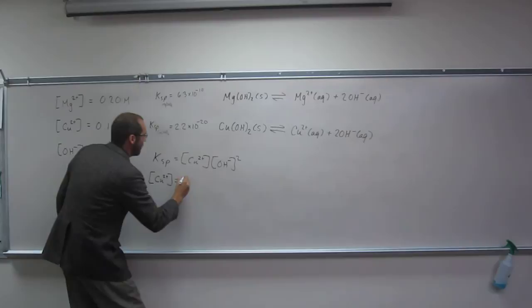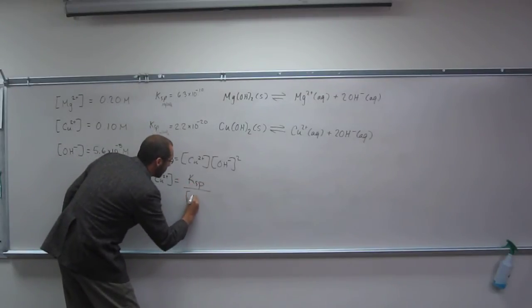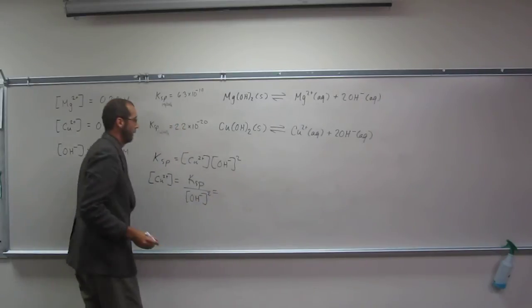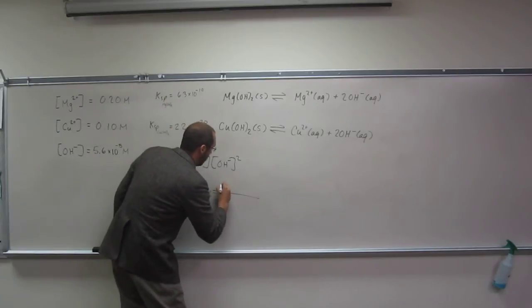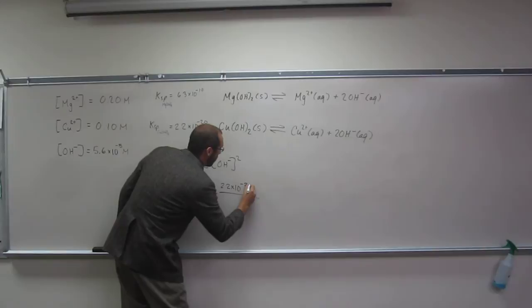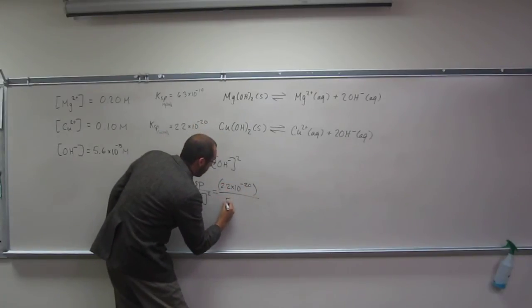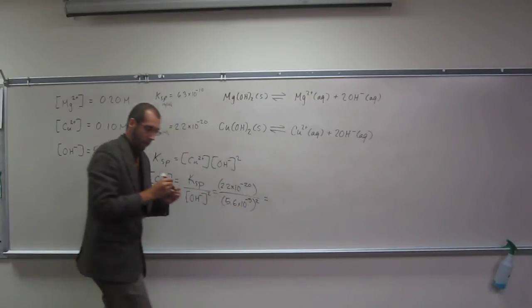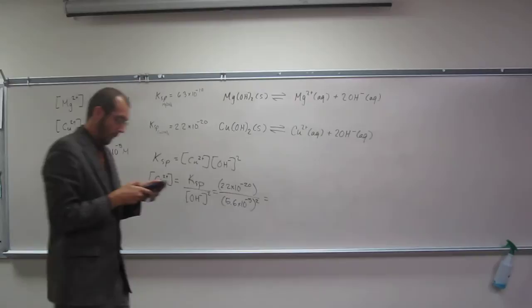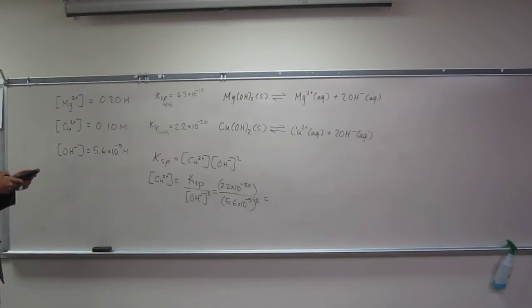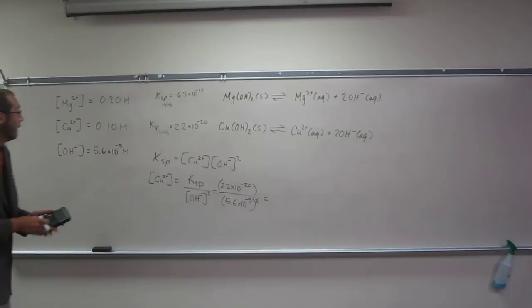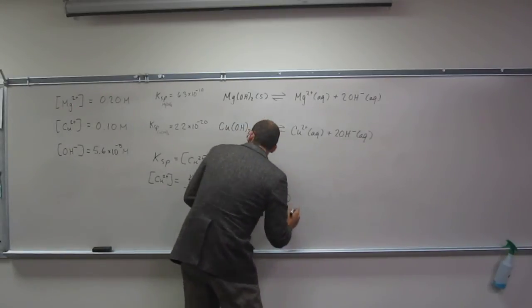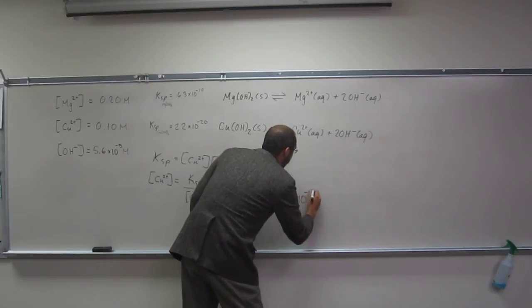It's going to be Ksp divided by the concentration of OH- squared. So Ksp of copper(II) hydroxide, 2.2 times 10 to the negative 20, divided by 5.6 times 10 to the negative 5 squared. I get 7.0 times 10 to the negative 12 molar.